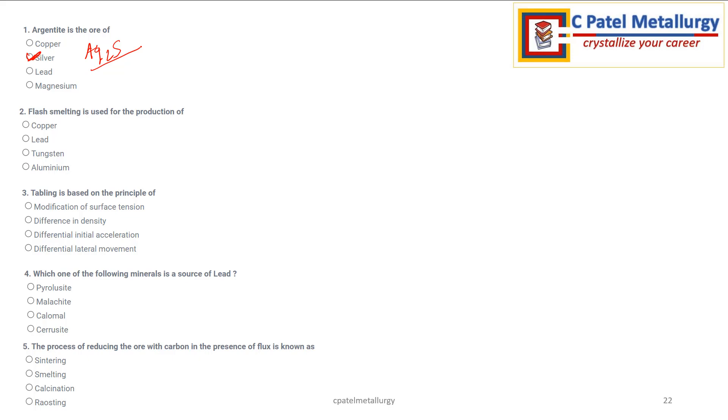That means sulphide ore of silver is called as Argentite. Then flash smelting is used for the production of copper. So the flash smelting, we have the furnace something like this. We put the burner over here, reduce the heat, the flame and bottom we have the copper. Here it will be molten copper and here it will be slag. And the exhaust gases get out from here.